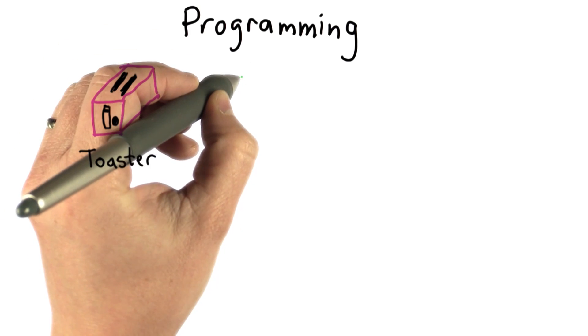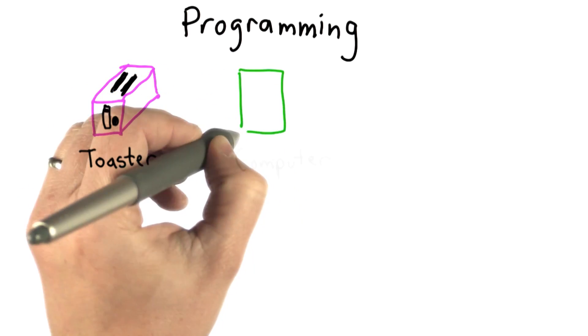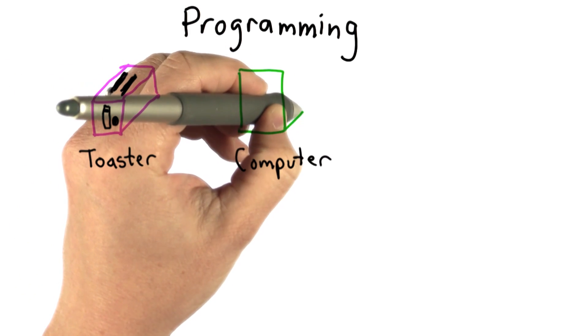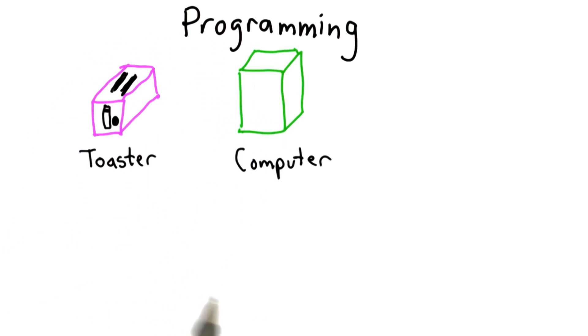So without a program, a computer is even less useful than a toaster. Can't do anything without a program. The program is what tells the computer what to do. The power of a computer is that unlike a toaster, which is designed to only do a few things, a computer can do anything. A computer is a universal machine.